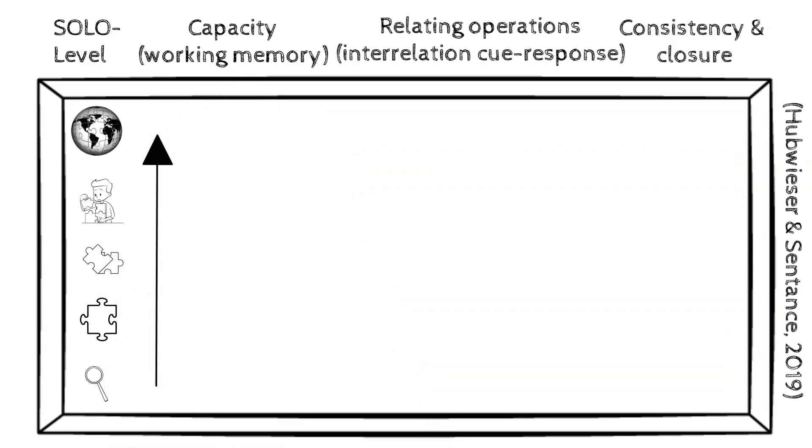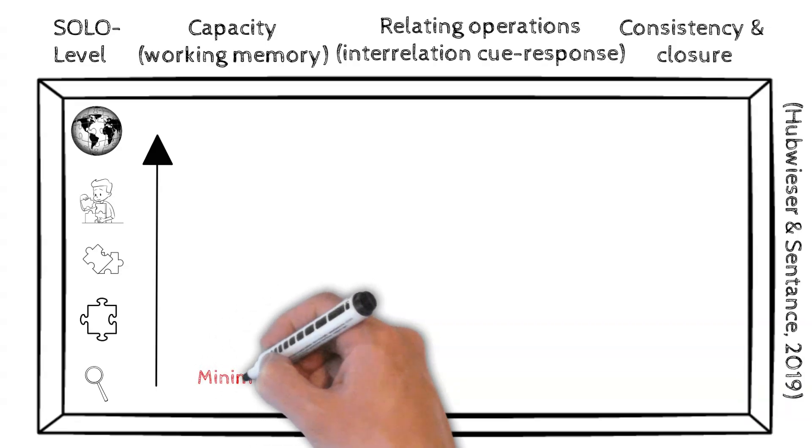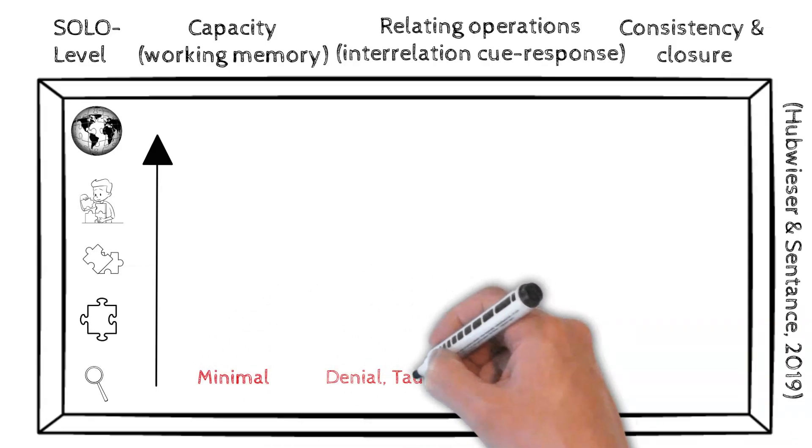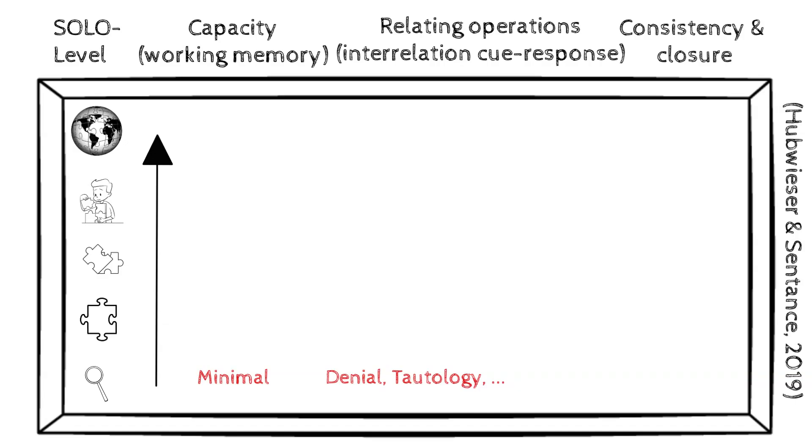At the pre-structural level, capacity is low. Students merely repeat the question or they express confusion. There is no meaningful connection between elements and the response is inconsistent and incomplete.